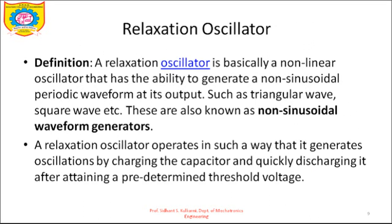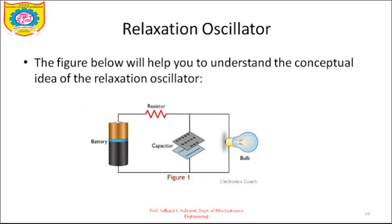The next circuit we will look at is the relaxation oscillator. A relaxation oscillator is a non-linear oscillator that has the ability to generate non-sinusoidal periodic waveforms at its output, such as triangular waves and square waves. It is also known as a non-sinusoidal waveform generator. A relaxation oscillator operates by charging a capacitor and quickly discharging it after attaining a predetermined threshold voltage.